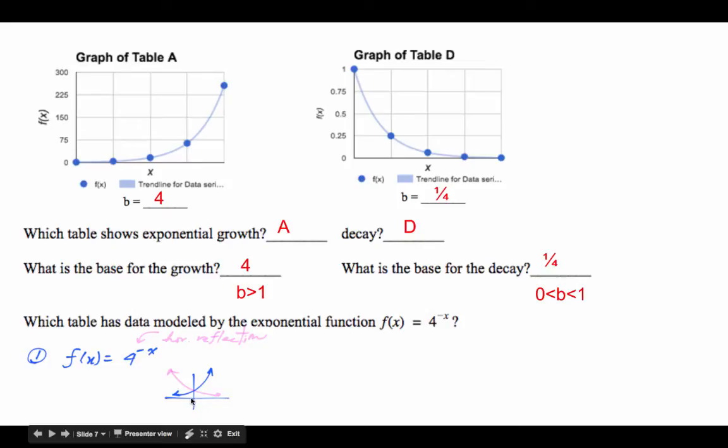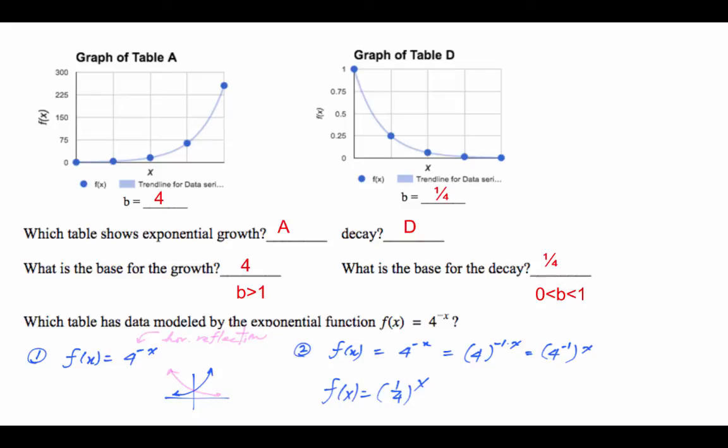So we seem to be implying that the base should be 1/4 when it's negative value. I think the answer is yes. So the answer to this question is table D. But there's a second way to look at it. If you have y = 4^(-x), negative x could be written as -1 times x. Because it's multiplication, it could be 4^(-1) to the power of x. But as we know, 4^(-1) = 1/4. So it's table D, and it is an exponential decay.